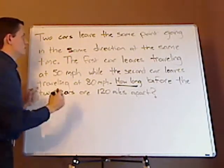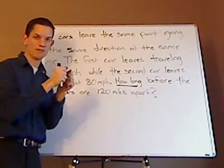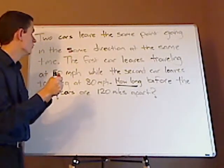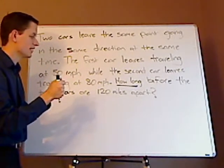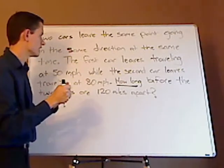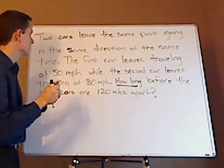The key sentence is the first one. Two cars leave at the same point, they're going in the same direction at the same time. So a lot of constants there, a lot of things that are the same.